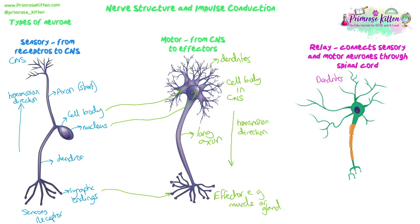The relay neuron connects the sensory and motor neurons and is often located in the spinal cord — in the CNS itself. It has many short dendrites around its cell body, still with the nucleus in the cell body, and a quite short axon, so they're not traveling very far — sometimes they can even look almost circular. They have synaptic endings, and transmission direction is again away from the cell body to those synaptic endings, similar to the motor neuron. In this diagram, the motor neuron has a myelin sheath around the axon — those orange squares — and some neurons have it and some don't; we'll talk about why in a bit.